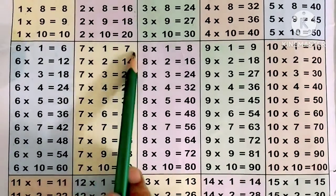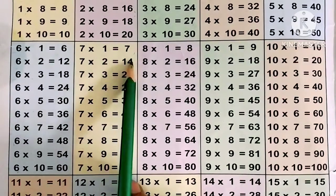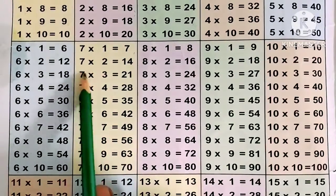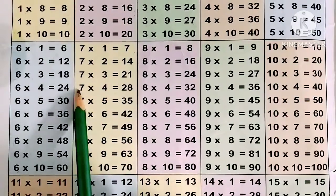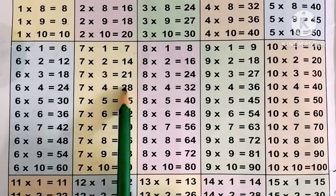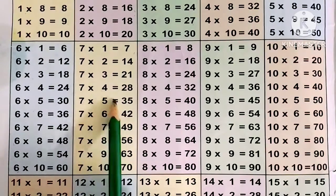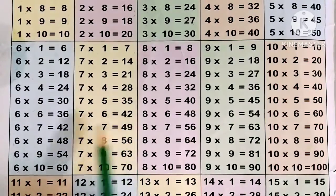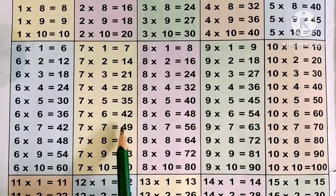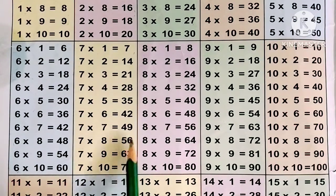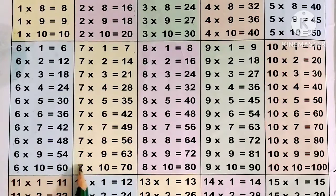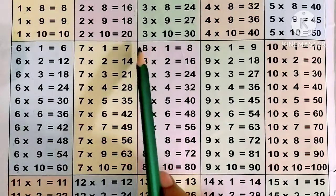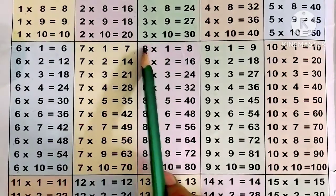Now the 7 times table. 7 ones are 7, 7 twos are 14, 7 threes are 21, 7 fours are 28, 7 fives are 35, 7 sixes are 42, 7 sevens are 49, 7 eights are 56, 7 nines are 63, 7 tens are 70.